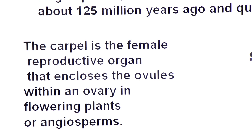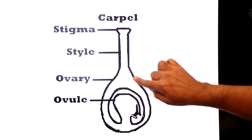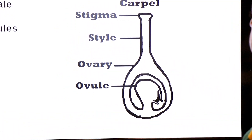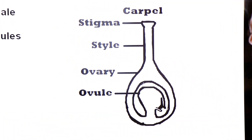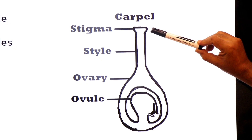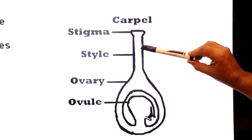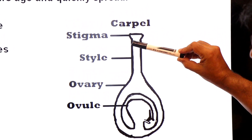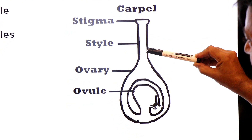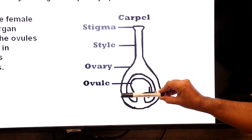Look at the diagram of carpel - this is the female reproductive part. The top of the carpel has a sticky knob known as stigma. Then there is a long tube-like part known as style. Style leads to the ovary.